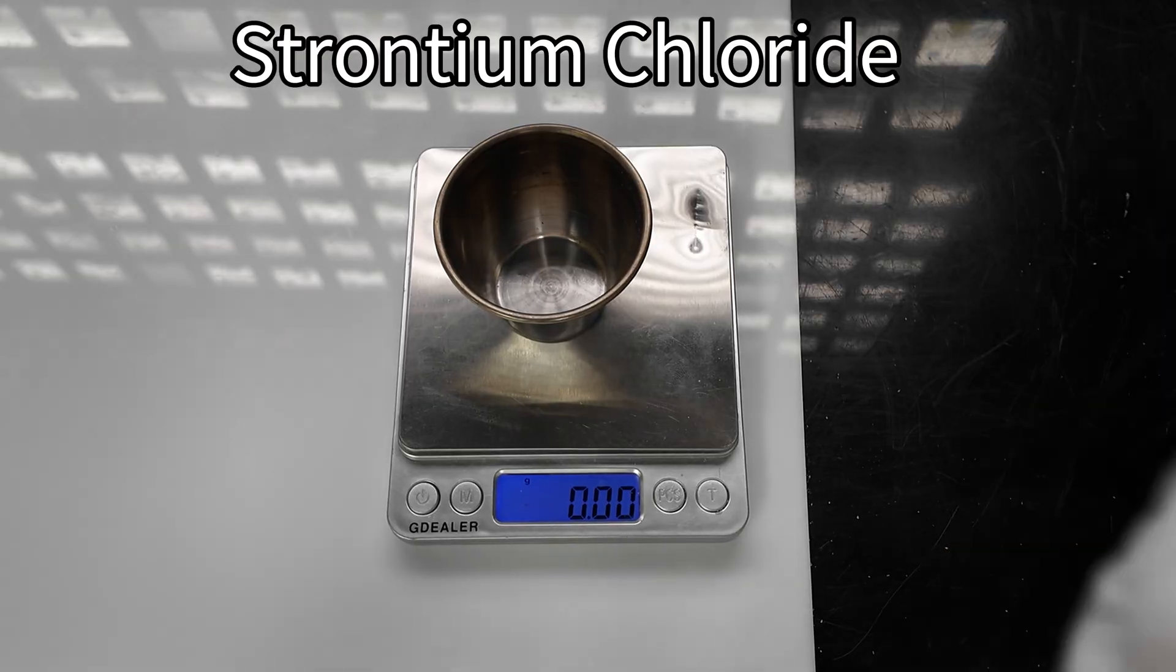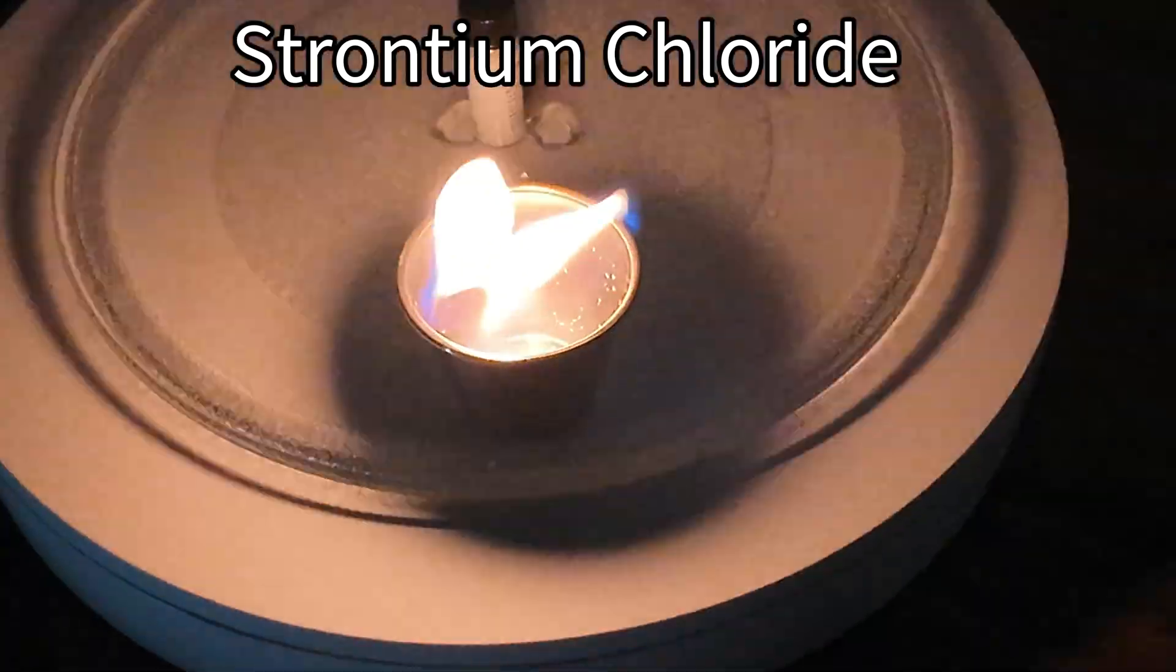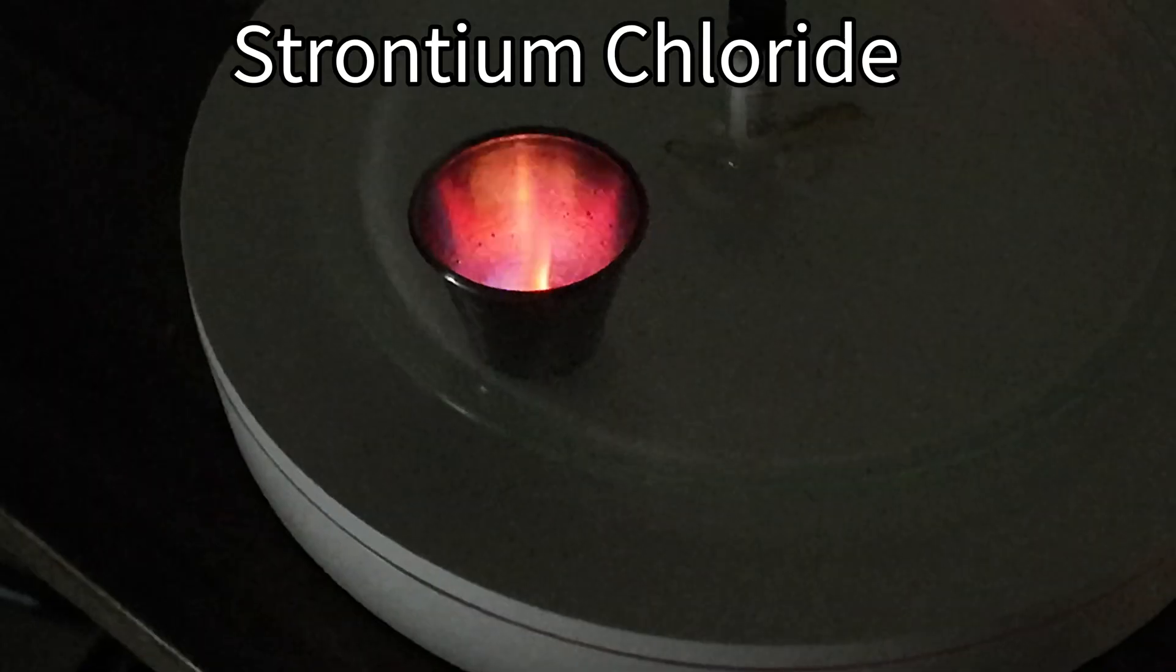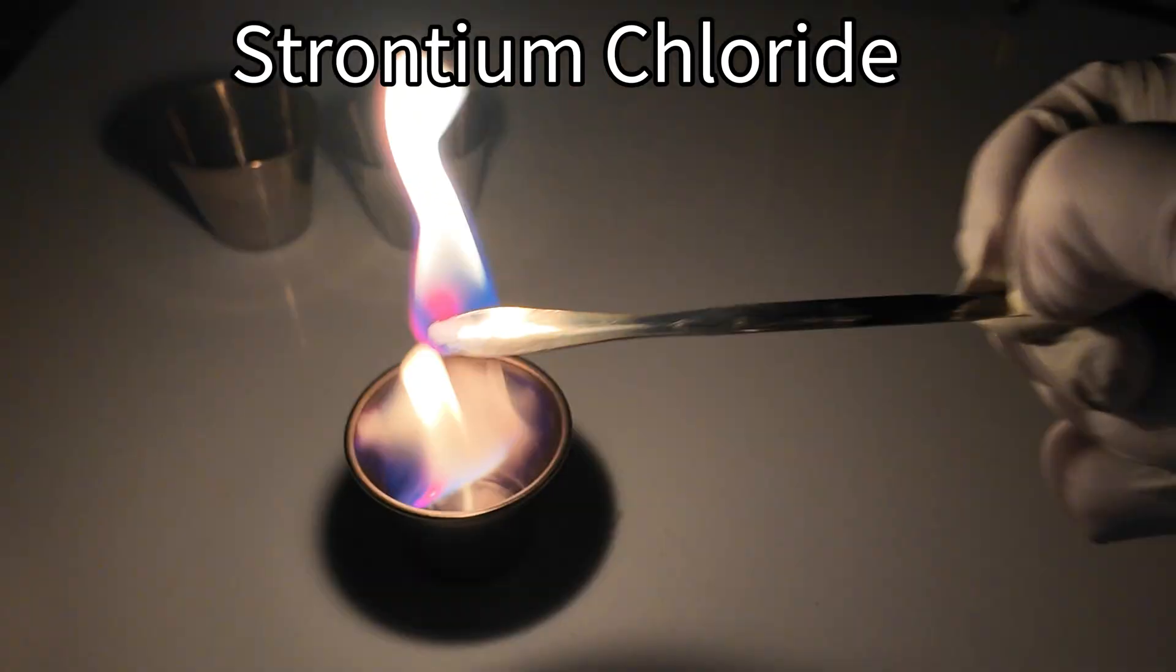Now let's heat up some strontium chloride. As you can see, when the strontium is heated, it turns into this deep red color. It is a lot more intense than the orange that we saw from the calcium chloride.